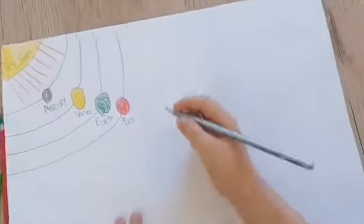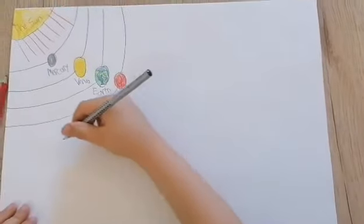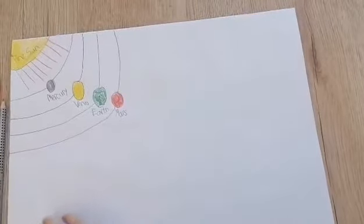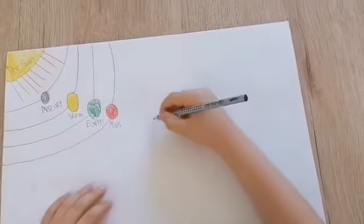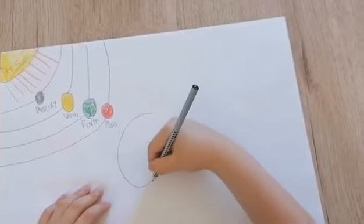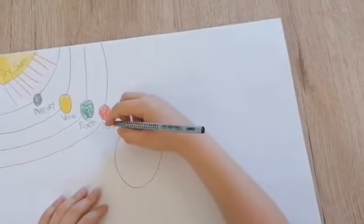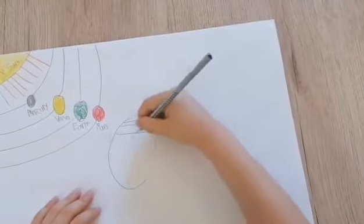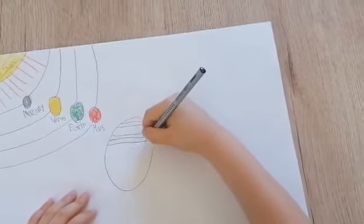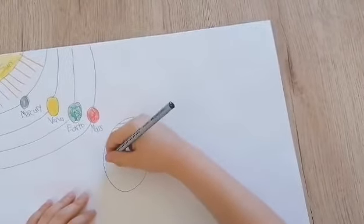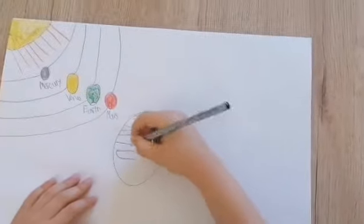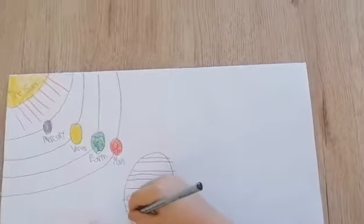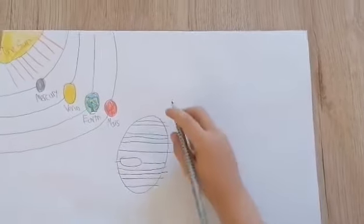Now between here comes the asteroid belt, but we're not gonna draw that. So now we move on to Jupiter, the largest planet of our solar system. Now as I was saying, Jupiter has rings, but they're pretty much invisible rings. You can't really see them. And it has a big spot which is about twice the size of Earth. It's huge. It's a giant hurricane that's been going for hundreds of years.